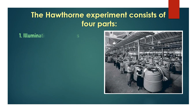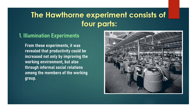The Hawthorne Experiment consists of four parts. 1. Illumination Experiments. From these experiments, it was revealed that productivity could be increased not only by improving the working environment, but also through informal social relations among the members of the working group.